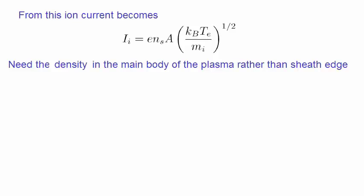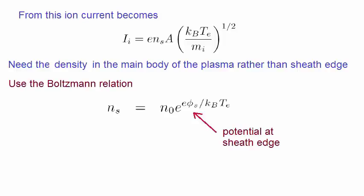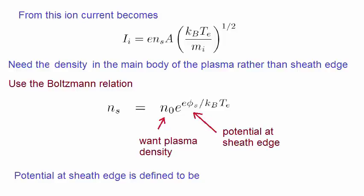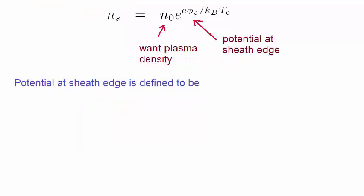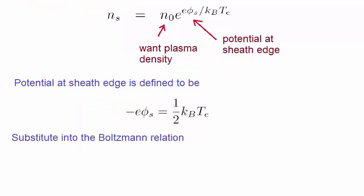To obtain this, we use the Boltzmann relation, given by this, where Φs is the potential at the sheath edge, and N0 is the plasma density that we want. The potential at the sheath edge is equated to the thermal energy in the plasma, given by this expression. Substituting this expression in the Boltzmann relation gives the following.